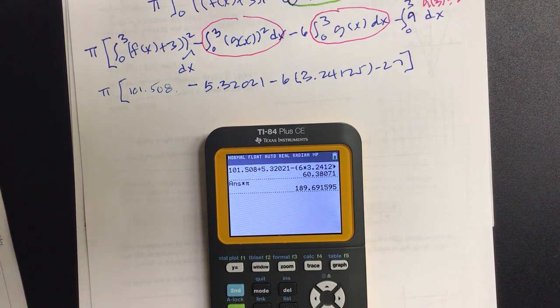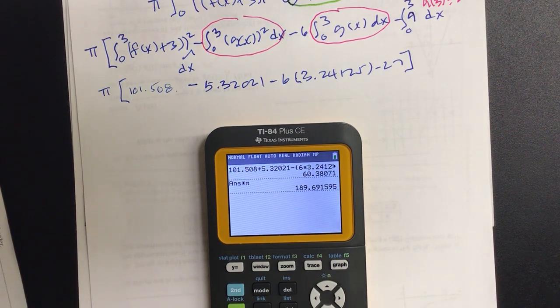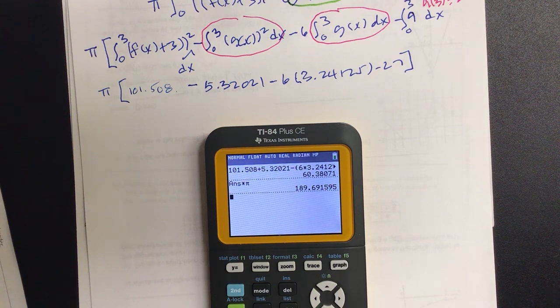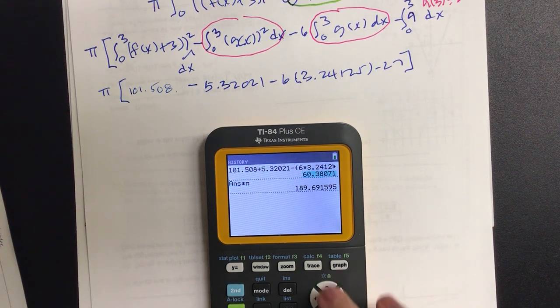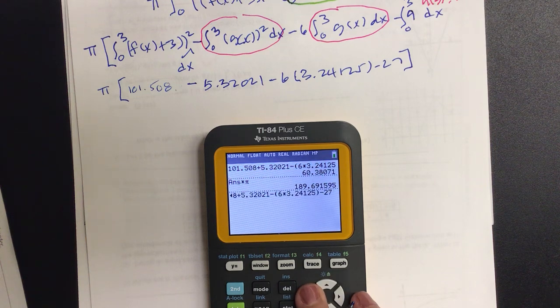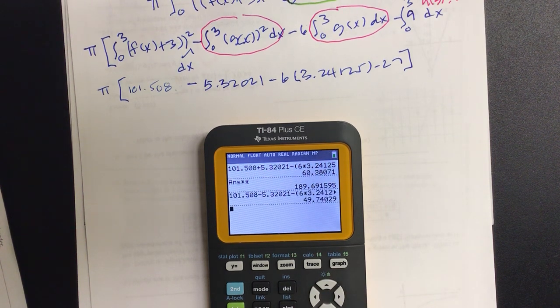We get 189, which is still wrong. We're about to do 101.508 plus... yeah that was a minus right? Yeah, thank you. Having a big moment today. It should be close to 150-ish.